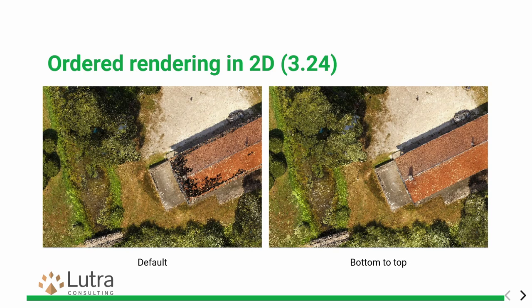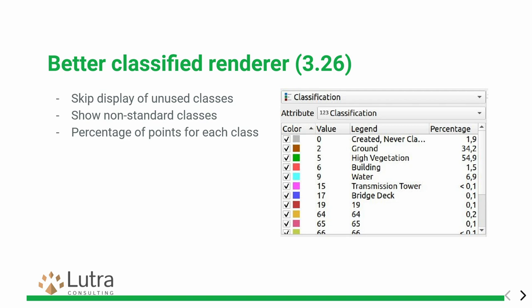For 2D we also added ordered rendering. By default, points are displayed in arbitrary order, but you can now switch to bottom-to-top or top-to-bottom ordered rendering, which is a bit slower but gives better quality. This is only a concern in the 2D case, because in 3D you always get proper ordering. We also improved the classified renderer — before you'd get all the hard-coded classes including ones you wouldn't care about. Now we only show classes that are actually present in your data. We also show non-standard classes like 64 or 65, and on the right side we show the percentage of each class.